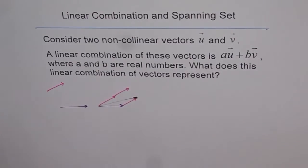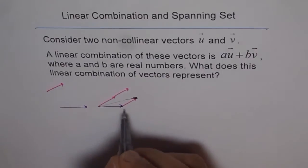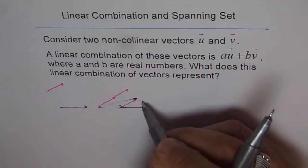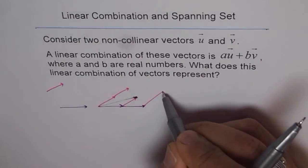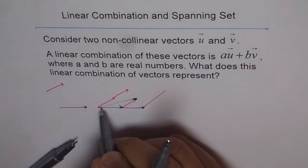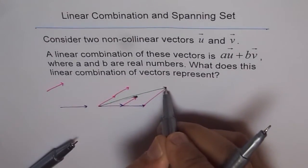In that case, this will be like up to here, and the other one will be up to here. And when we now draw a parallelogram, we get the resultant, which will be represented by this point.